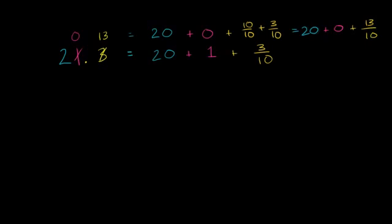Let's do another example with this exact same number. So once again, 21.3. And I'll write it out again. This is equal to 20 plus 1 plus 1. We'll do that in the purple color. Plus 1 plus 3 tenths.